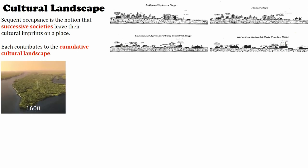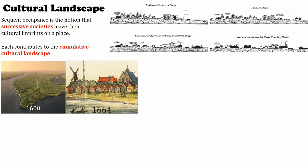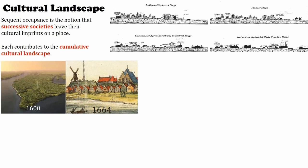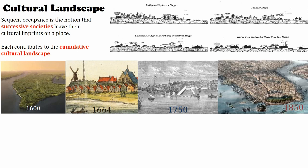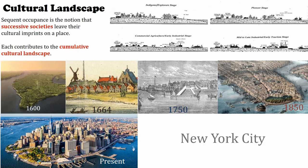Here's a place — it's a beautiful little peninsula in 1600. Then 64 years later, nice windmills. More buildings, more people — this place is really blossoming. It's New York! So this is an example of cultural landscape. There's been lots of different societies — the Dutch, the English, all these immigrants that came in the late 1800s that changed it. Still today it's constantly changing. Cultural landscape is constantly changing, but it's the imprint that humans leave on society.